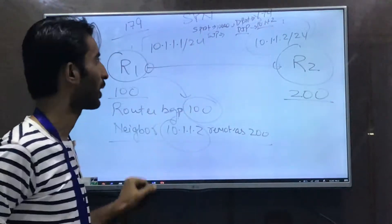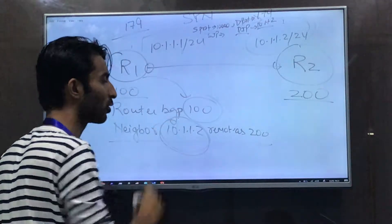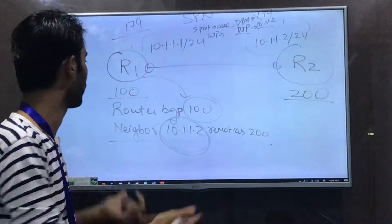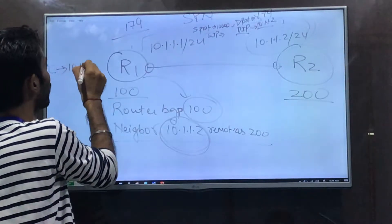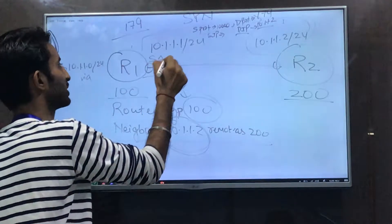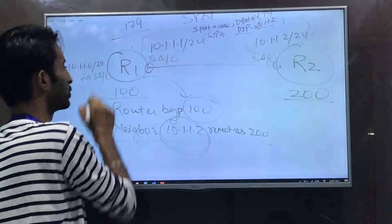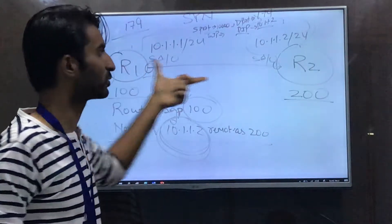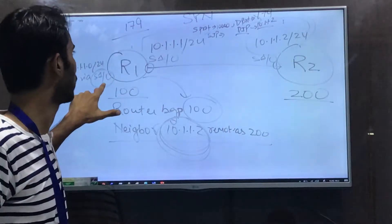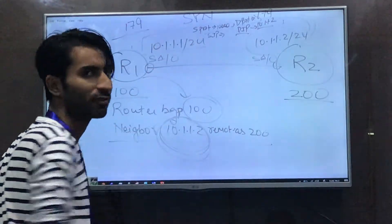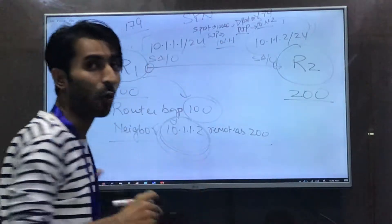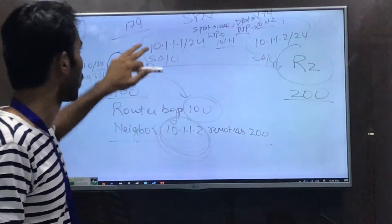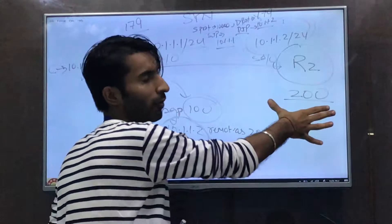The source IP is chosen by performing a recursive lookup in the routing table to find the exit interface. In our example, R1 has a connected route for 10.1.1.0/24 via interface Serial 1/0. Since the neighbor 10.1.1.2 is reachable via Serial 1/0, which holds IP 10.1.1.1, the source IP becomes 10.1.1.1.